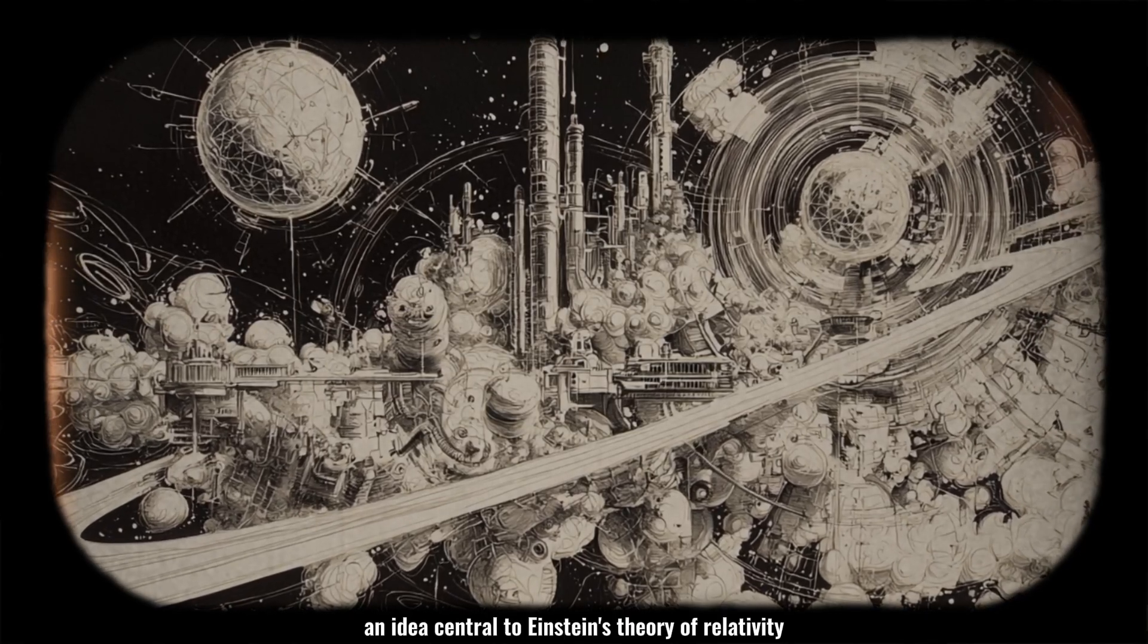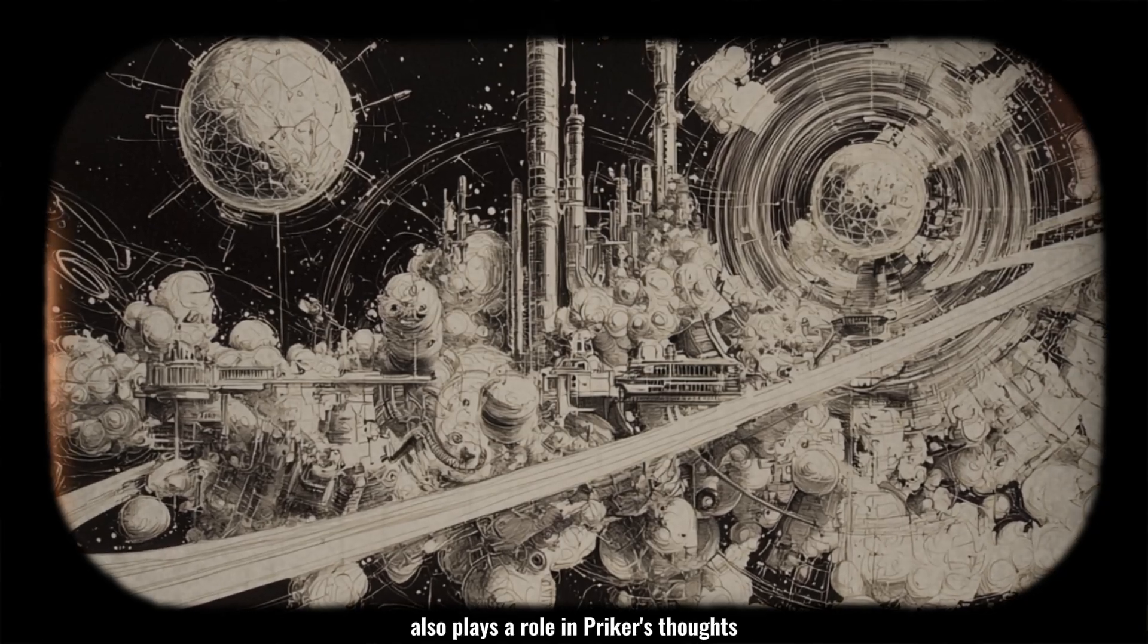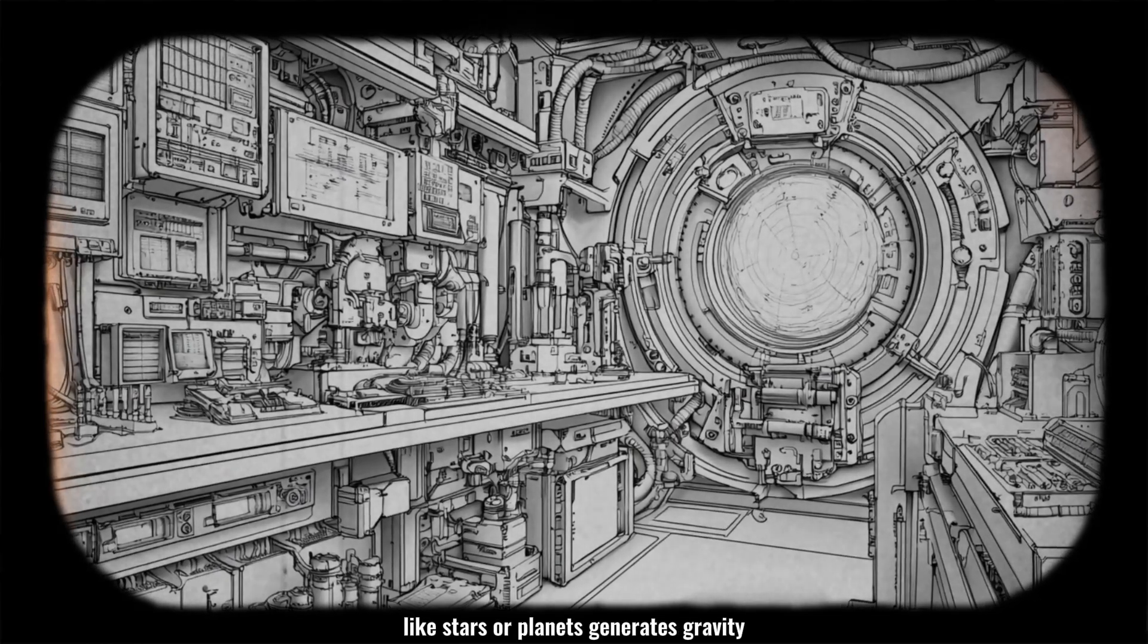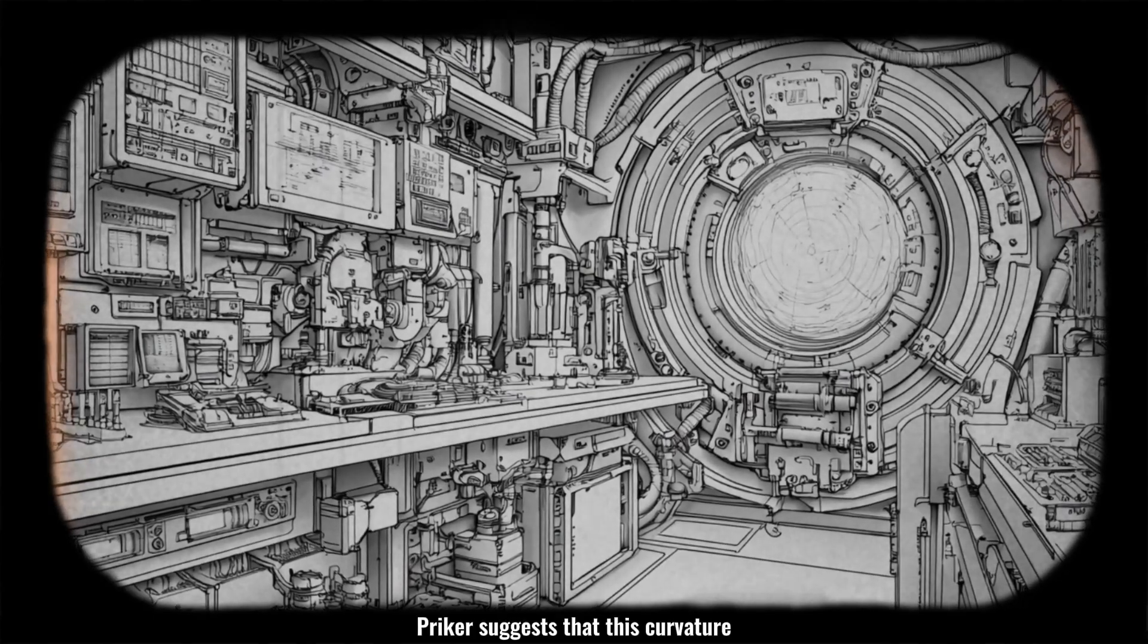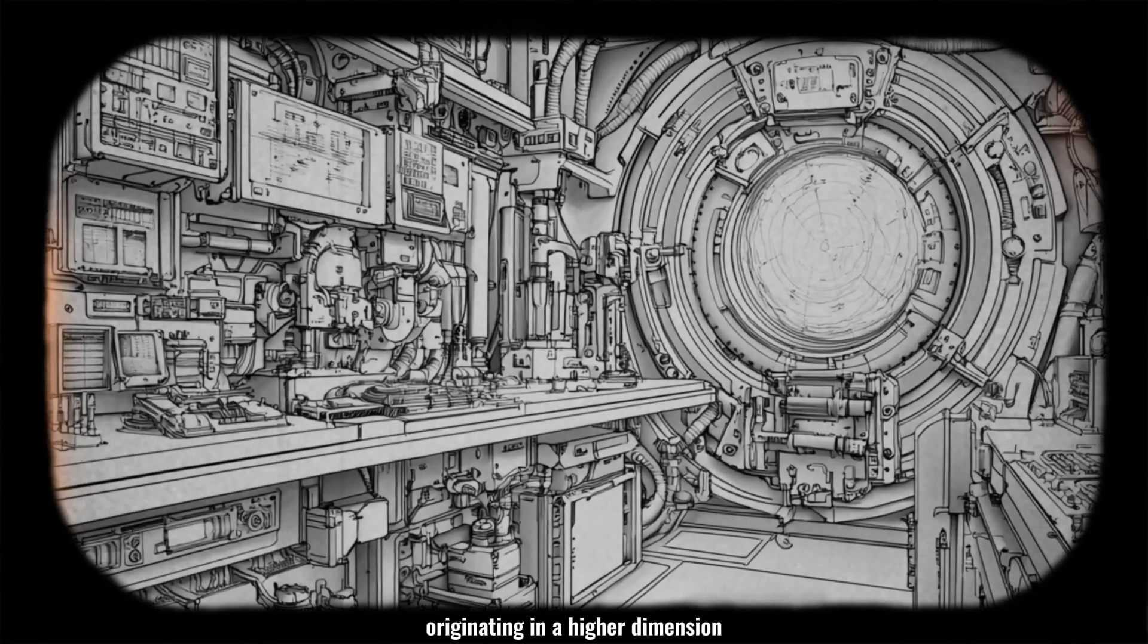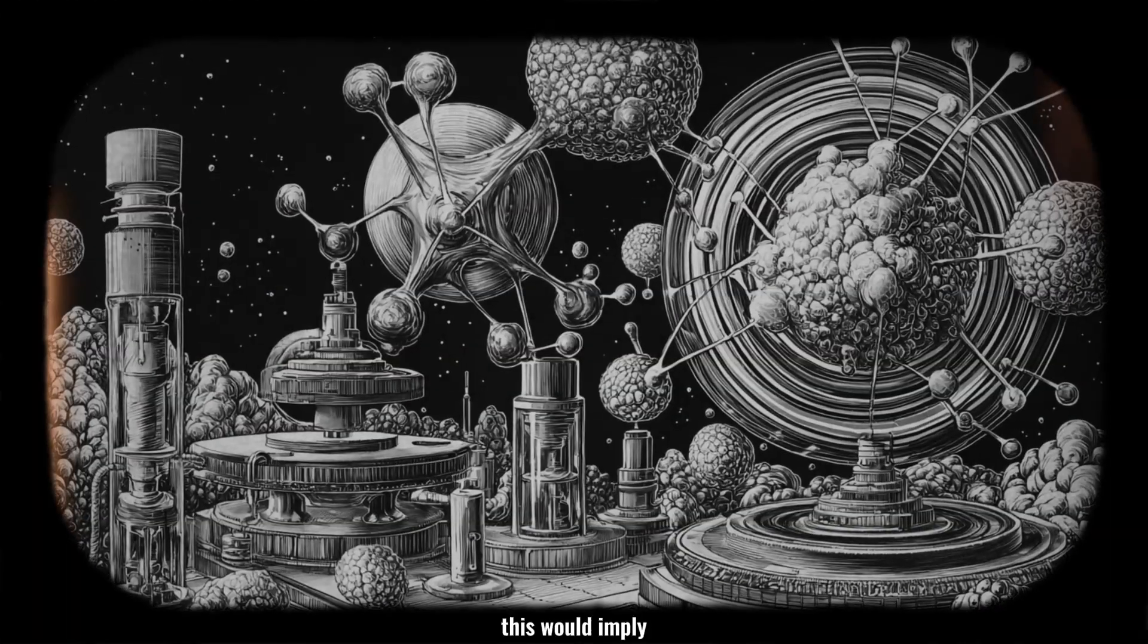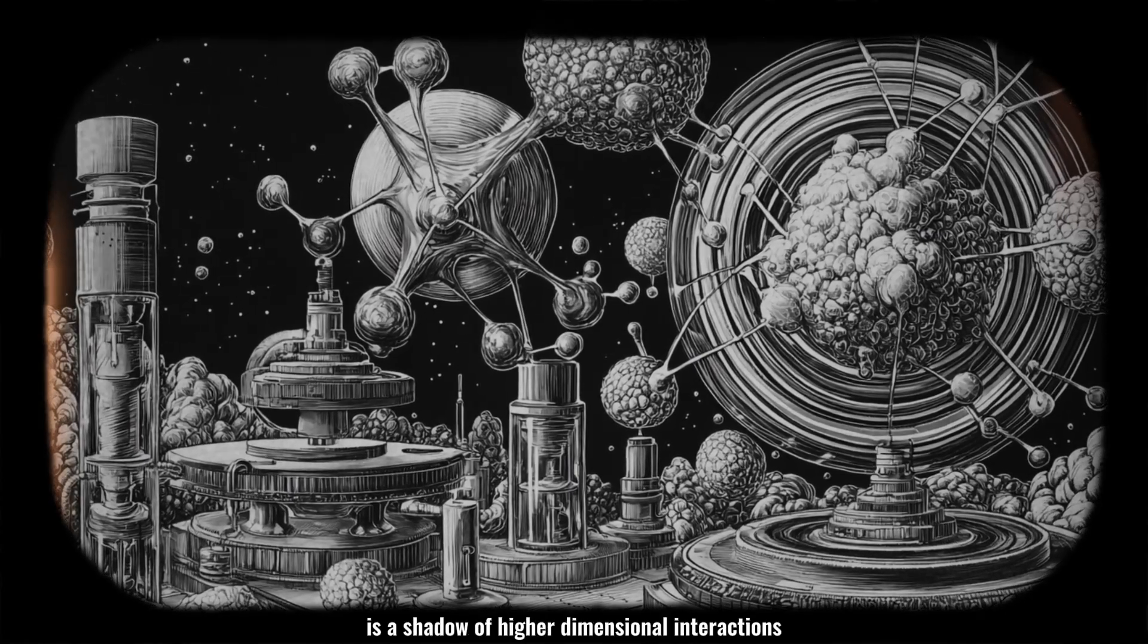Curved space-time, an idea central to Einstein's theory of relativity, also plays a role in Pryker's thoughts. The warping of space-time around massive objects like stars or planets generates gravity, a force felt in the three-dimensional world. Pryker suggests that this curvature may actually be influenced by forces originating in a higher dimension, adding another layer to our understanding of gravity and space-time. If true, this would imply that the gravitational force we experience is a shadow of higher-dimensional interactions.